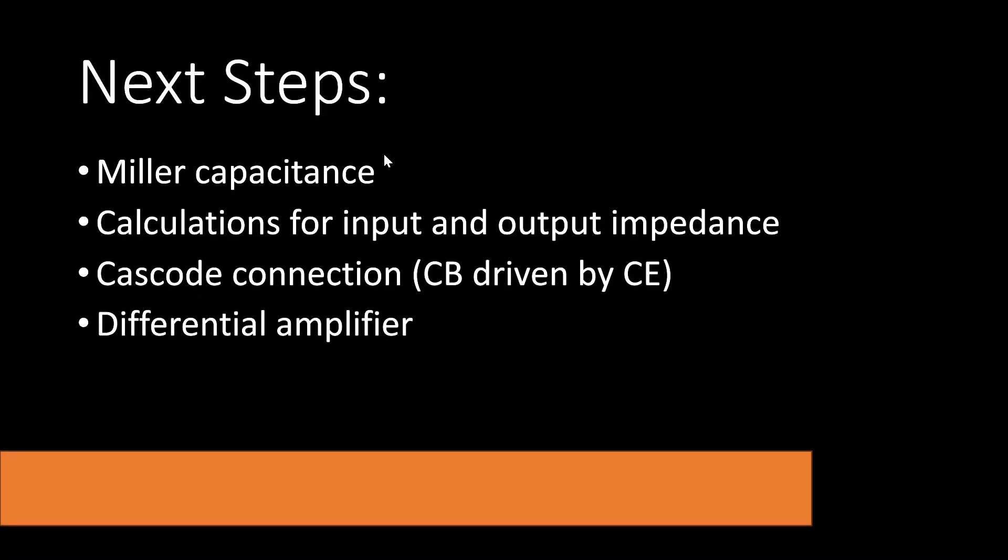If you'd like to learn more, you should study up on something known as Miller capacitance. Perhaps in another video, we can explore how to calculate the input and output impedance. For example, empirically, we determine that the input impedance is about 5 ohms. Well, there's a way to do that with math. You may want to learn about cascode, not cascade, a cascode amplifier, where you find a common base amplifier is driven by a common emitter amplifier, which has a lot to do with this Miller capacitance I mentioned. And finally, you might want to learn about the differential amplifier, which is used on the front end of operational amplifiers.